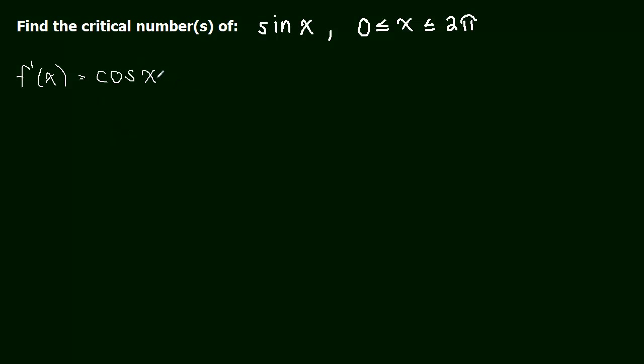So now we have to figure out when cosine of x equals 0. Cosine exists for every x, right? You can plug in any x you want, so it's going to always exist. So when does this equal 0? So cosine of x equals 0. And when does that happen?